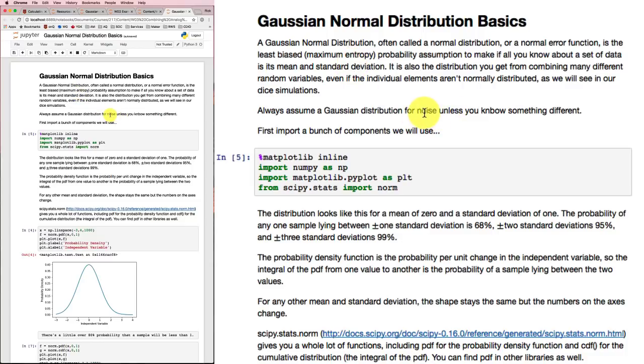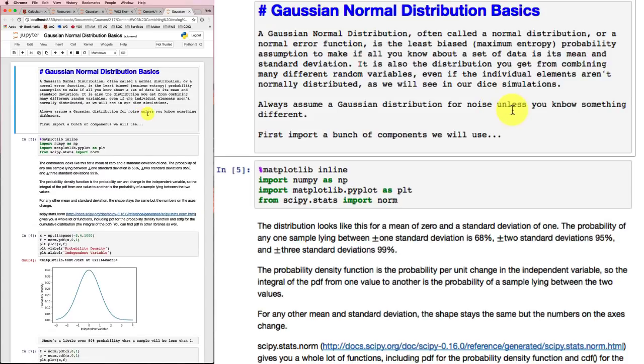So throughout all of our work, we're going to always assume that our noise is Gaussian distributed. Now if we knew something different, then we might be able to make some sense out of that knowledge.